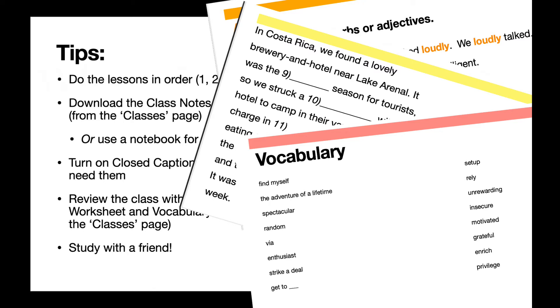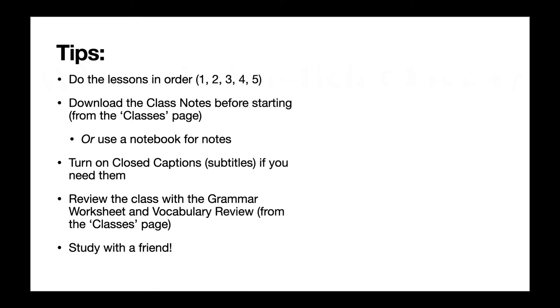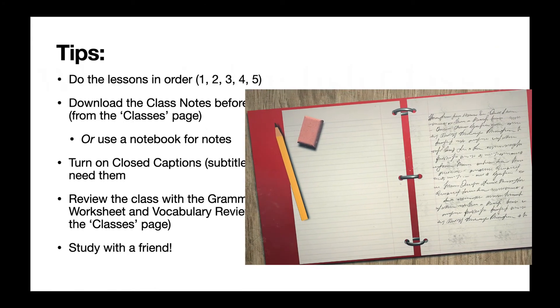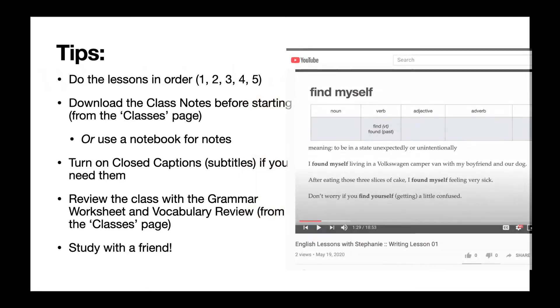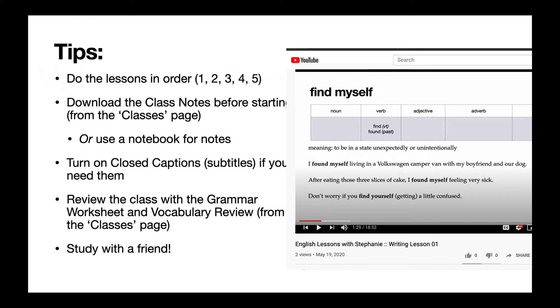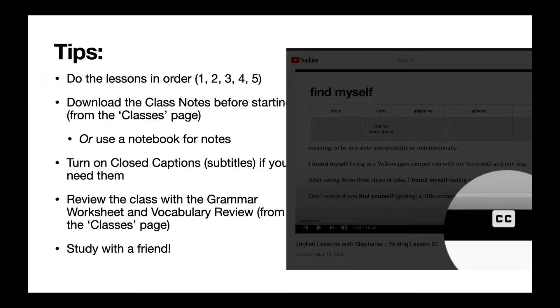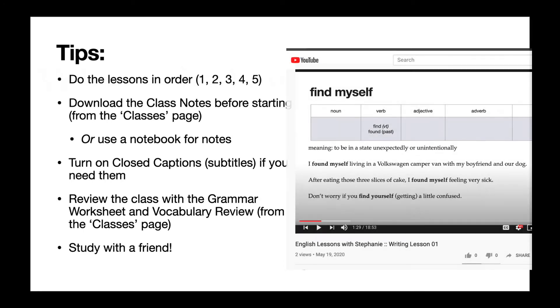If you don't have access to a printer or you can't download these handouts, you can just use a notebook for notes. Third, turn on closed captions if you need them. If you're having trouble understanding the videos, if they're too hard for you, you can turn on subtitles, which can help you to understand the videos a little bit better.